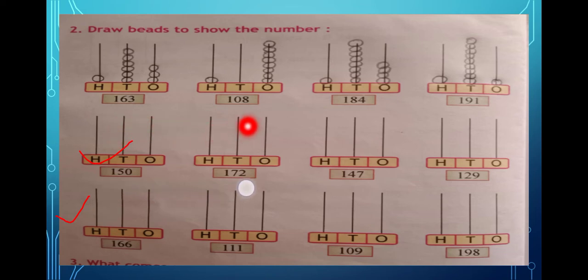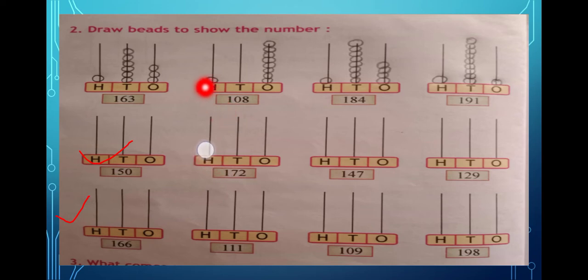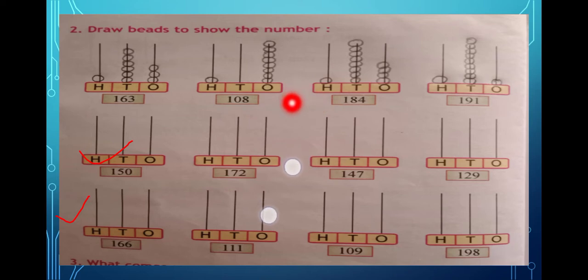The next question is 108. In ones place draw eight beads. In tens place it is zero, so you leave it empty — nothing there. In hundreds place it is one, so draw one bead. For 184: four is in ones place so draw four beads, eight is in tens place so draw eight beads in the tens part.